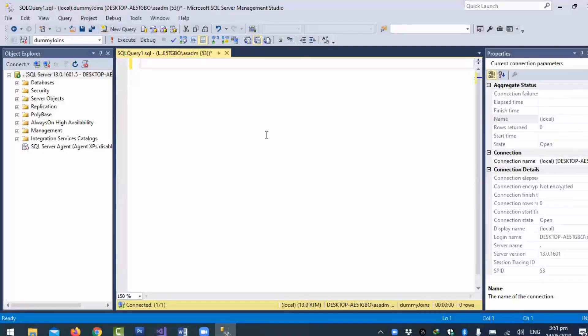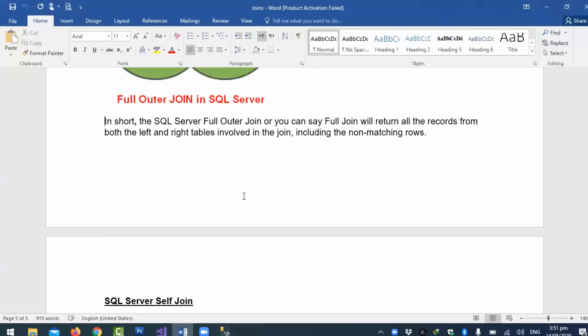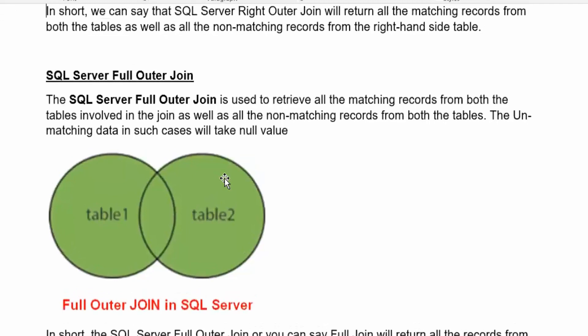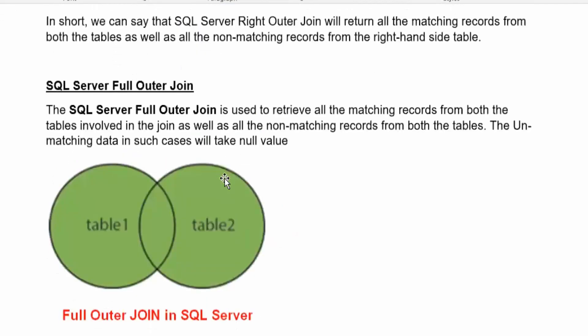Here we have two tables. Let's discuss full outer join. We have already discussed left outer join and right outer join. We have seen what is the right outer join, what is the full outer join, and what is the inner join. We used one example and first we used inner join. In the inner join we were getting only the matching rows — only records which match both tables. We used the ON keyword.